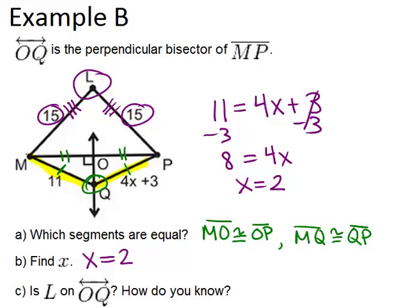Because those two segments are equal, it means that L must fall on the perpendicular bisector of MP, because it is equidistant from M and from P. Therefore, L must be on the perpendicular bisector OQ. So the answer is yes, and the reason is because it is equidistant from M and from P.